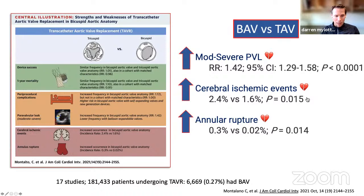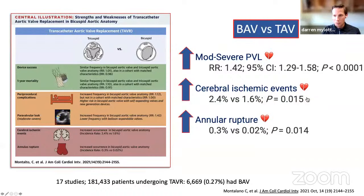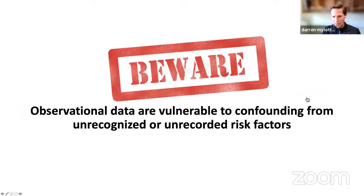On the other hand, published last week in JACC Interventions, a meta-analysis of 17 studies comprising 181,000 patients undergoing TAVI — 7,600 of which had bicuspid aortic valve — found exactly the opposite: increased rates of moderate-to-severe PVL, increased risks of stroke, and an increased risk of annular rupture compared to patients with tricuspid aortic valve. So we've got two different datasets coming to two very different conclusions. We therefore need to be cognizant that observational data are vulnerable to confounding from unrecognized or unrecorded risk factors, and should be thought-provoking and hypothesis-generating but not taken as solid evidence of safety and efficacy.